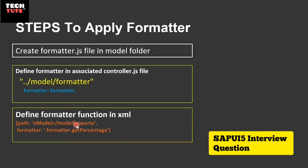Wherever the model property is complex in details and we want to format this value, we have to put a comma and then provide the formatter path: formatter dot the method that we are going to apply in the formatter.js file.